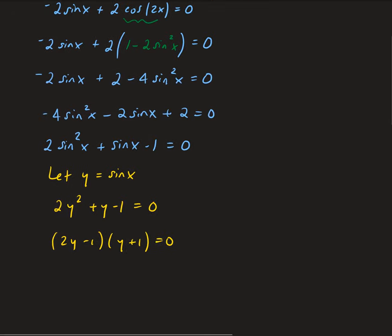From the factored form, we get y = 1/2 or y = -1. Since we used substitution, we need to substitute these back in to solve for x.